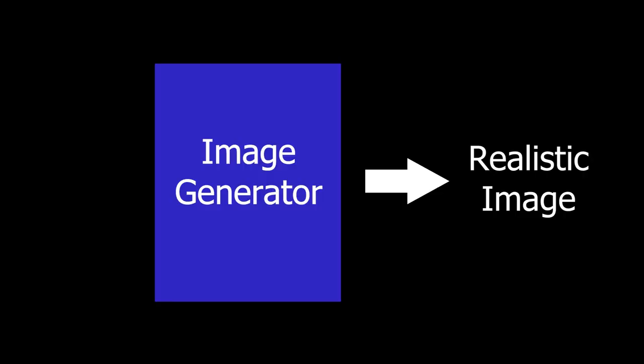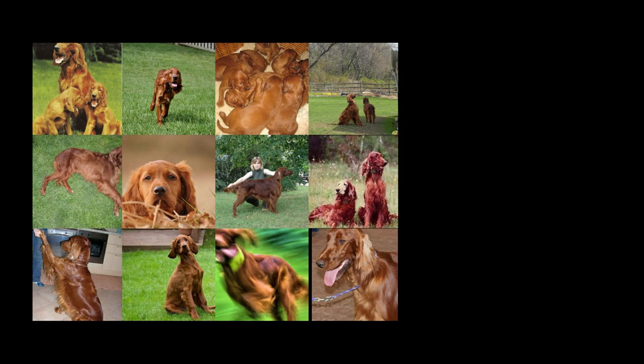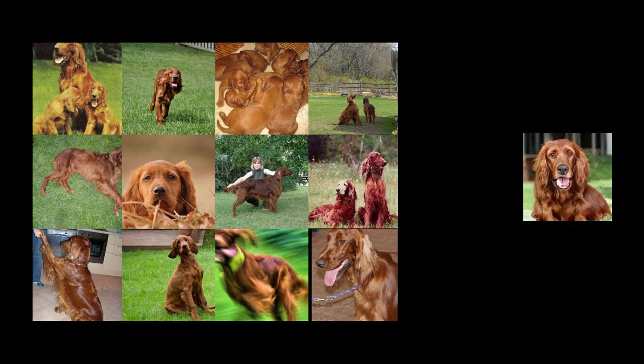So let's start with a statement of the problem. We want a program that can generate realistic images, but what does realistic mean exactly? If we're going to solve a problem with deep learning, the first question we have to answer is: what is our data? We need some dataset of images — it doesn't matter what kind. It could be people or mountains or cats or dogs or all of the above. A realistic image simply looks like it could belong in that dataset, and we want a program to generate these images for us. This is a perfect problem for deep learning.